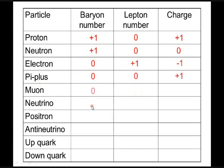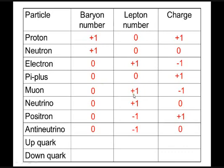The muon is not a baryon, it is a lepton, charge minus one. The neutrino is not a baryon, it is a lepton, charge zero. The positron is not a baryon — it's an anti-lepton, so lepton number minus one, charge plus one. The anti-neutrino is also an anti-lepton, lepton number minus one, charge zero. For quarks: the up quark has baryon number one third, lepton number zero, charge plus two thirds. The down quark has baryon number one third, lepton number zero, charge minus one third.